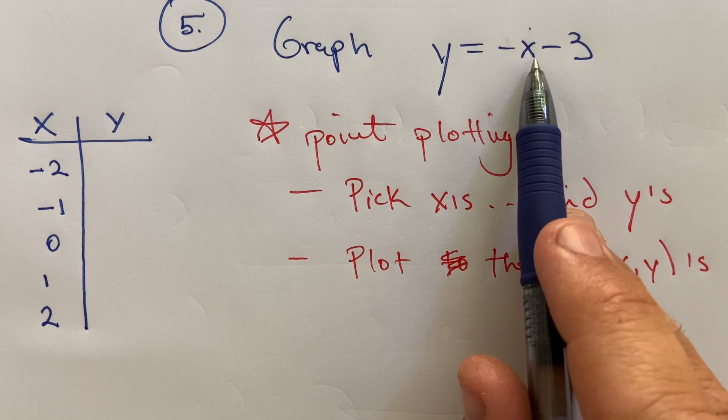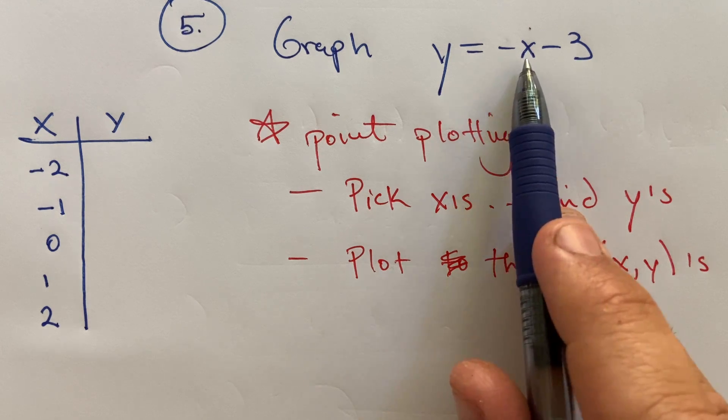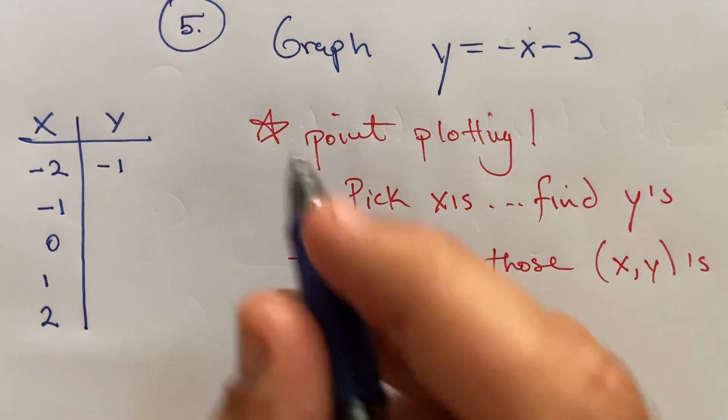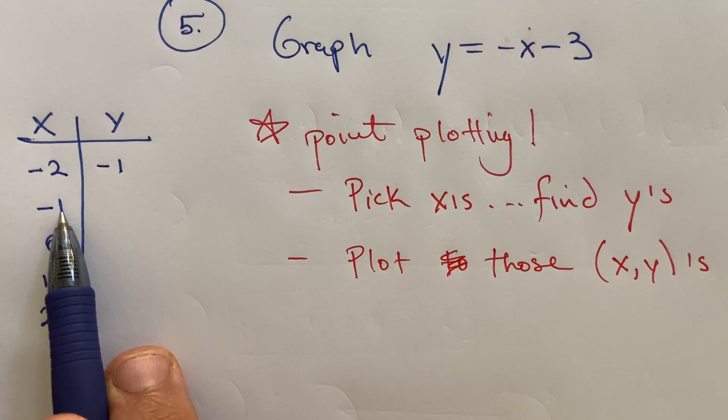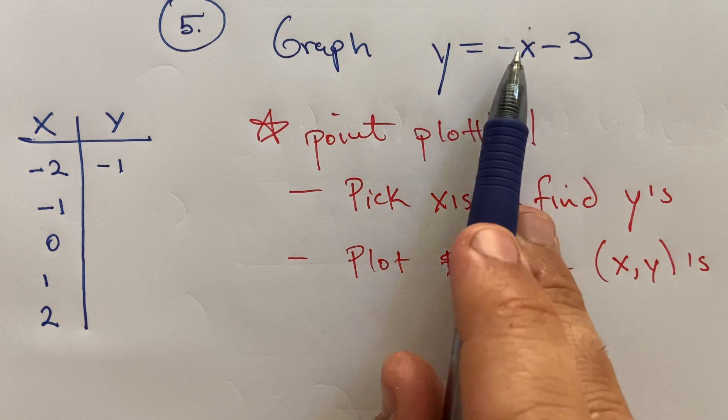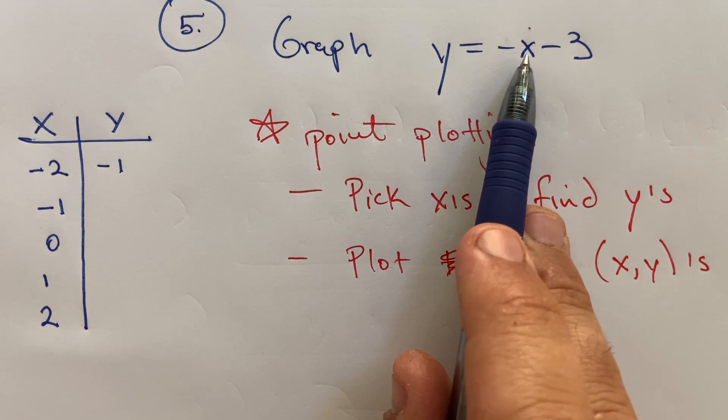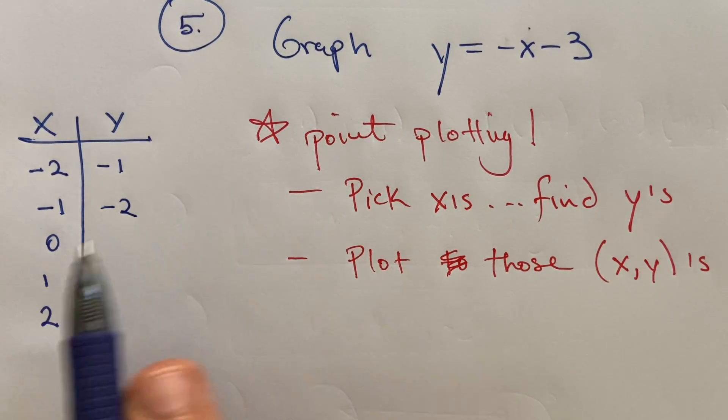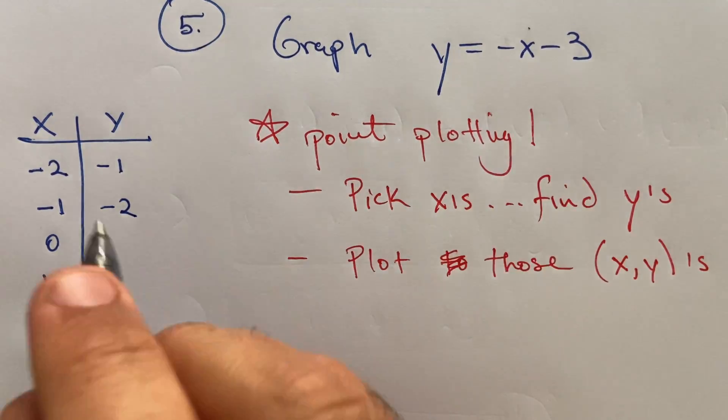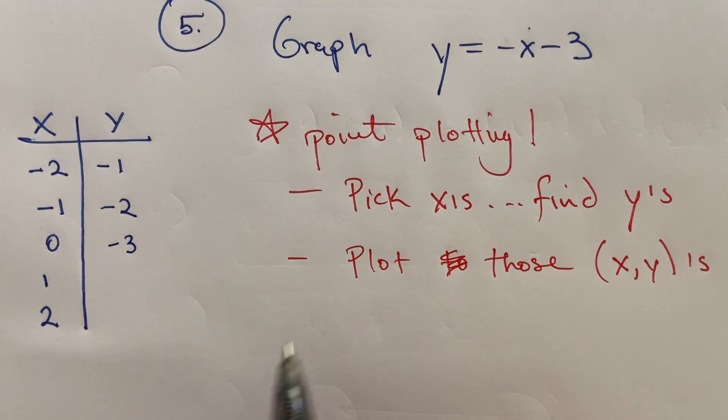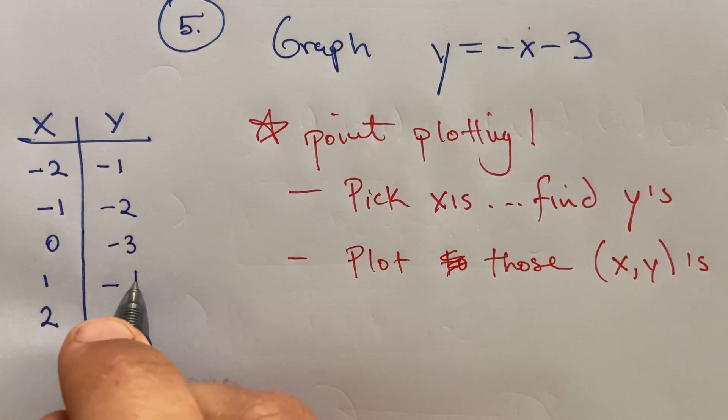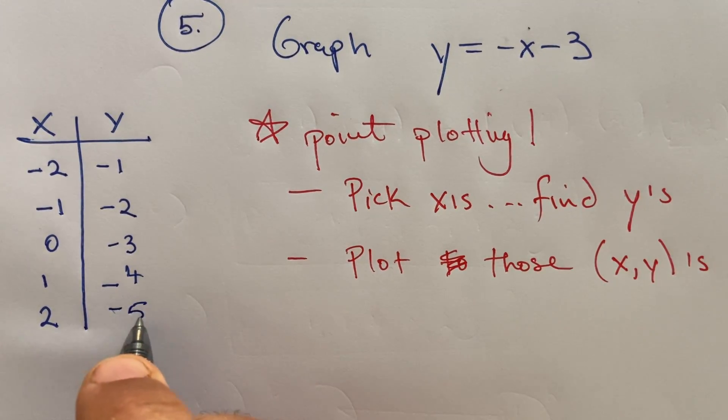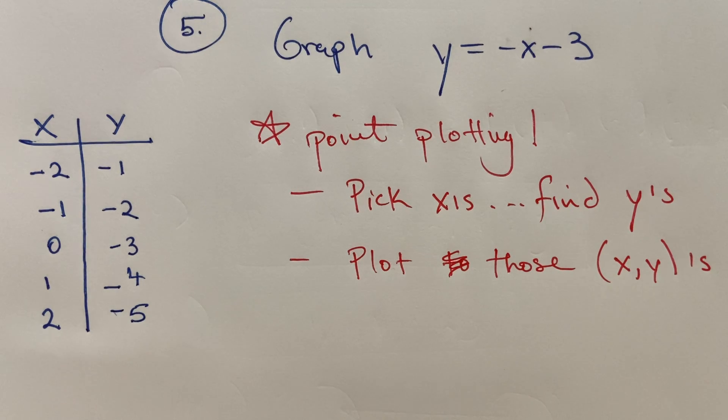And then what I'm going to do is plug those numbers in to figure out y. So now I'm taking negative two, plugging it in for x. Negative times negative two is two, two minus three is negative one. Now I'm taking negative one, plugging it in for x. Negative times negative one is positive one, one minus three is negative two. Plug in a zero and so on. I get negative three, plug in a one I get negative four, plug in a two I get negative five. So these would be some points you could plot.